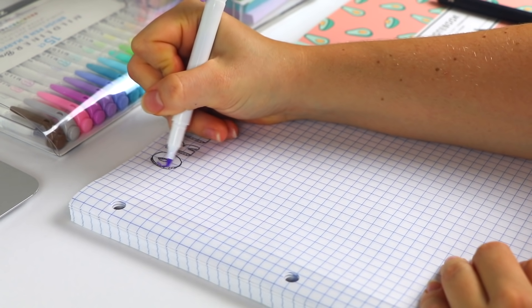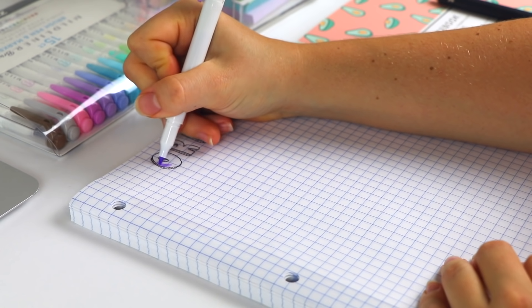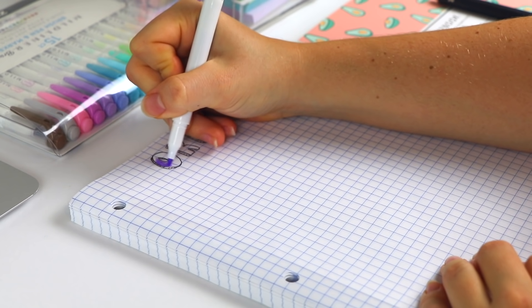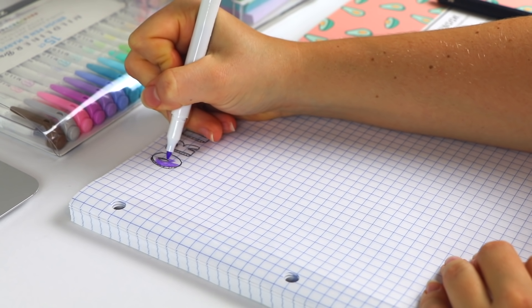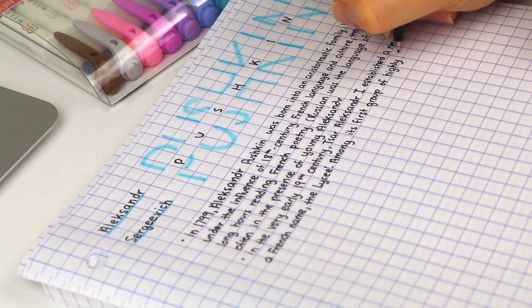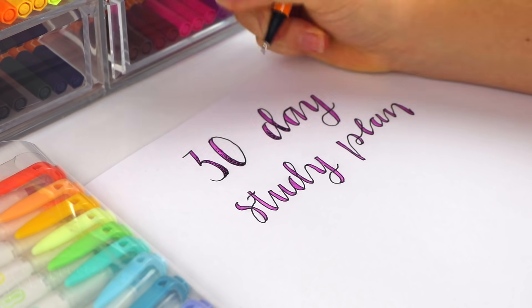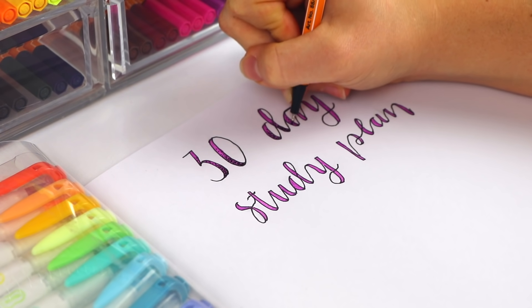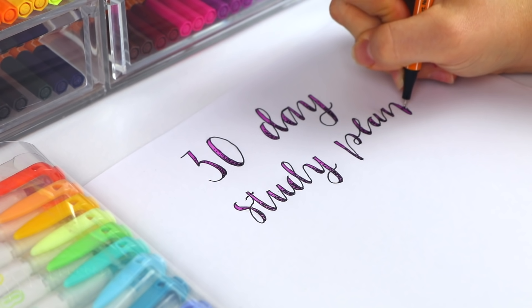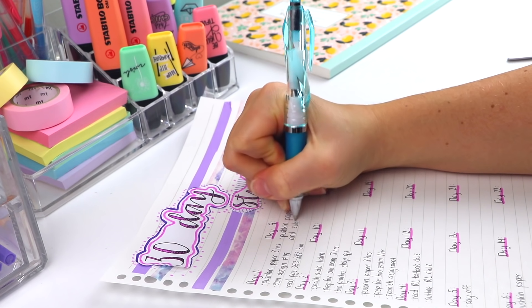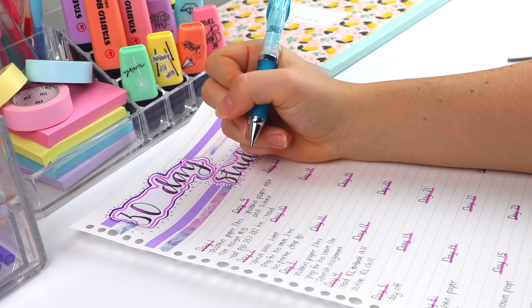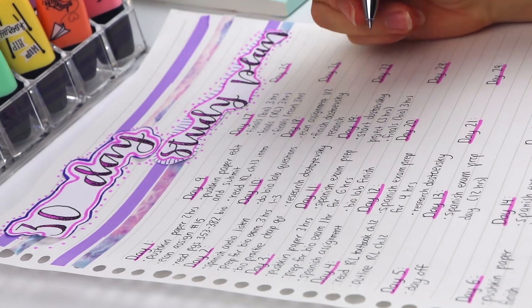Usually around 30 days before the end of the semester I start remembering, oh I have to prepare for finals, I have to do so many things. Then I start making a glorious plan where I write down all the things that my ideal perfect self would do and how I'm going to prepare this time for all of my finals in advance.